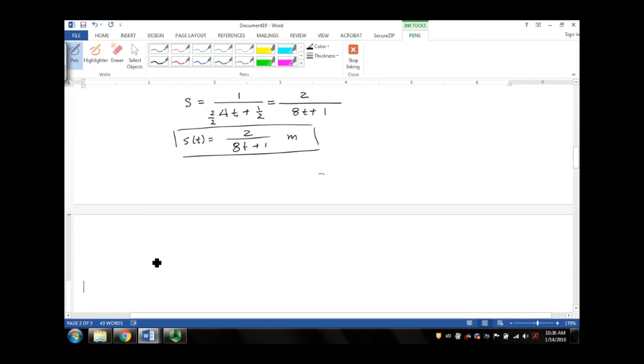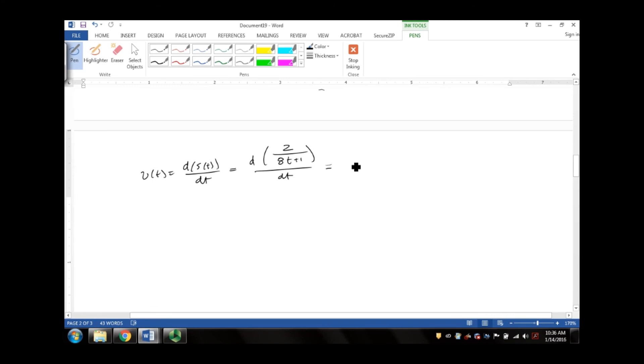So we can just differentiate that equation. Velocity as a function of time is just d of that function above over dt, which is the same as the derivative of 2/(8t + 1) with respect to dt. I like to have everything in this format, it makes it easier for me to take the derivative.